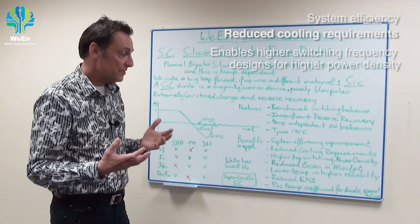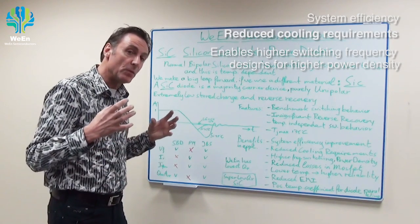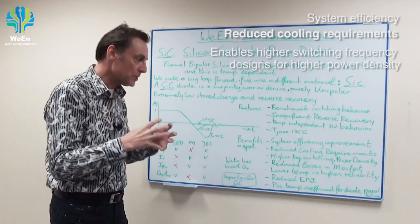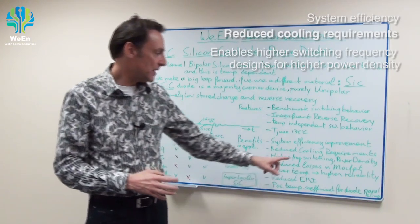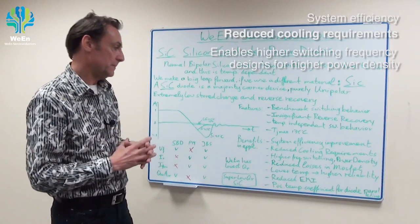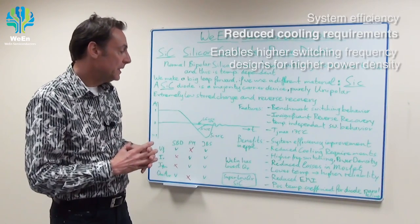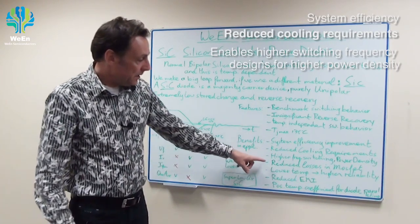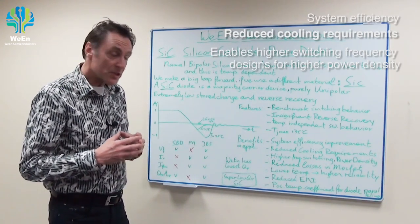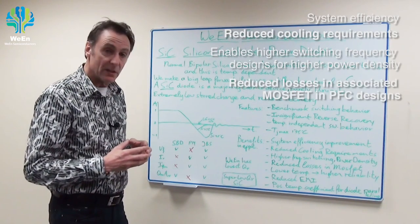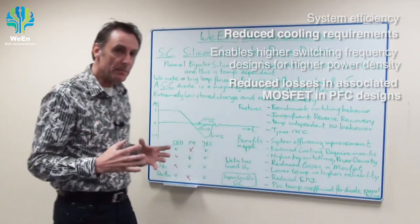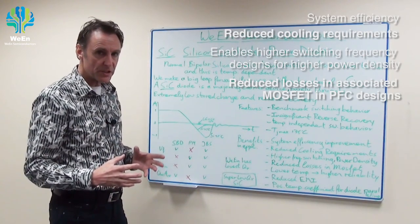Higher switching frequency is very important if you want more power density — to pack more power into a small size, you have to go to higher frequency switching, and the silicon carbide device can do it. A silicon carbide device will also lead to reduced losses in the accompanying MOSFET, for instance in a power factor correction circuit.